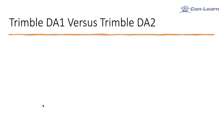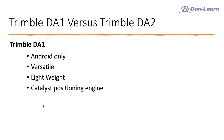Let's now talk about the difference between the DE1 and the DE2. The Tramble DE1 supports Android only. It is highly versatile, lightweight, easy to carry and store. It uses the Catalyst positioning engine.